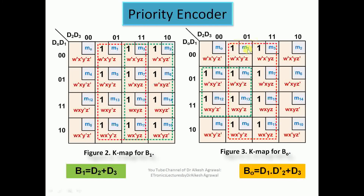In the K-map for b0, we have two groups: a smaller group of four minterms (m4, m12) and a larger group of eight minterms (m1, m3, m5, m7, m9, m11, m13, m15). From the group of four, d1 is fixed and d3 is eliminated, giving the term d1·d2'. From the group of eight, d0 and d1 are eliminated since they change, and what is fixed is d3. So b0 = d1·d2' OR d3.